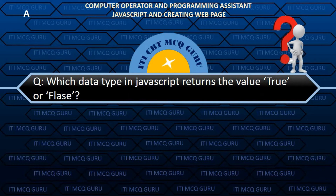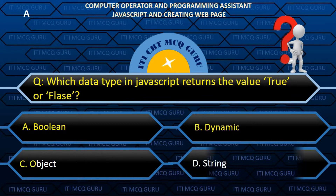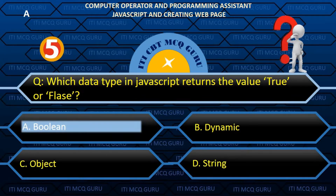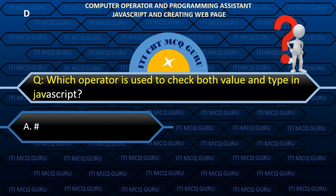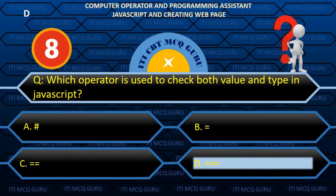Which data type in JavaScript returns the value true or false? A. Boolean. Which operator is used to check both value and type in JavaScript? B. Triple equals to (===).